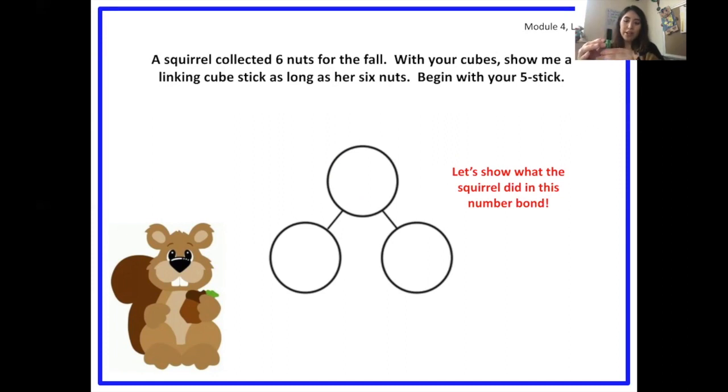If we show our five stick, because we know we like to keep our colors the same in fives and add one more. This is how six would look. So we started with five and we added one more and that makes six. So how would that look in our number bond? These are our parts and our parts make the whole.